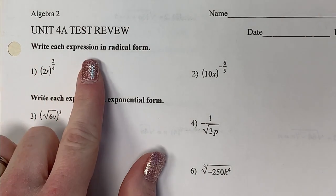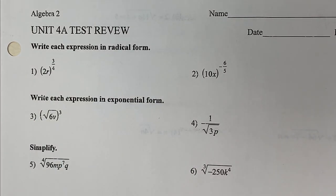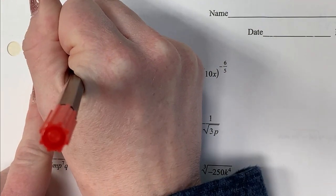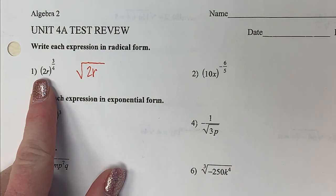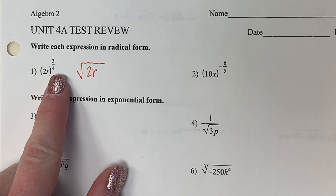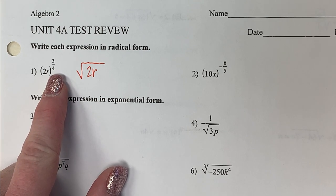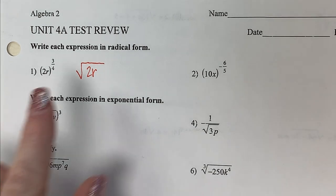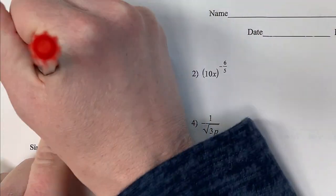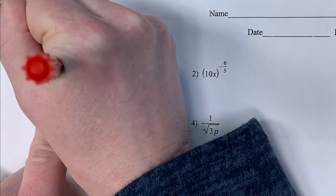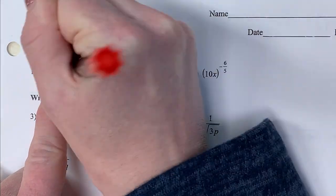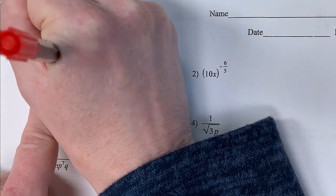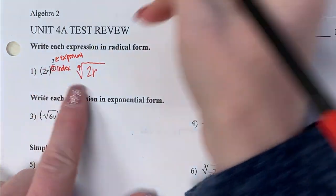The first section says: write each expression in radical form. All I need to do is convert it into a radical. So this '2a' in parentheses is what's going to go underneath the radical. Then I've got to deal with this fraction — one number becomes my index and another number is my exponent. The four — the denominator — becomes the index.